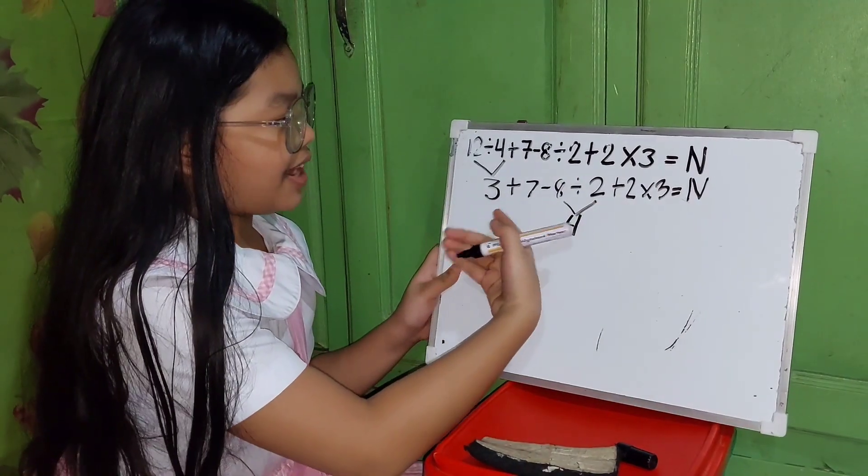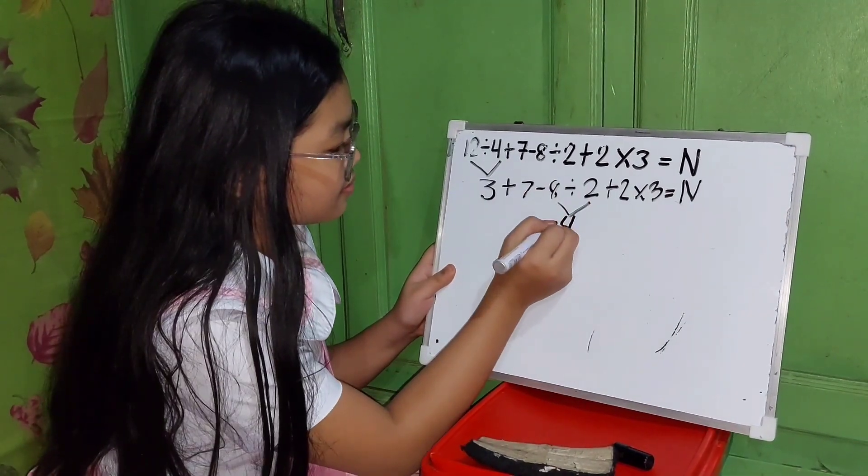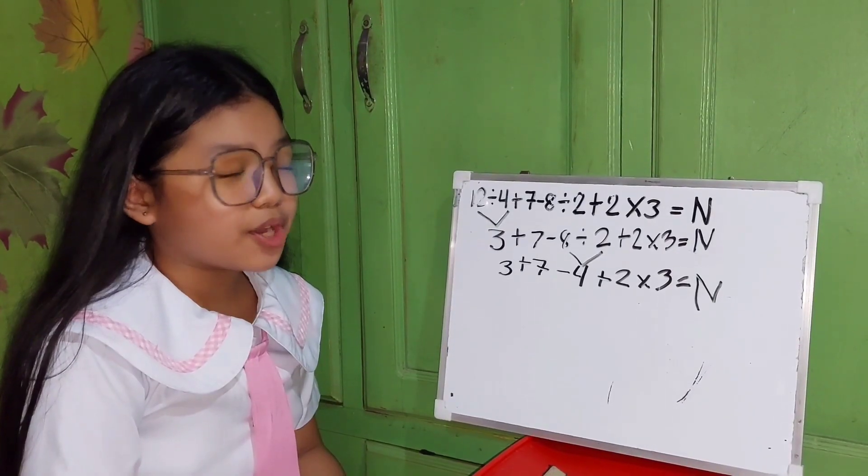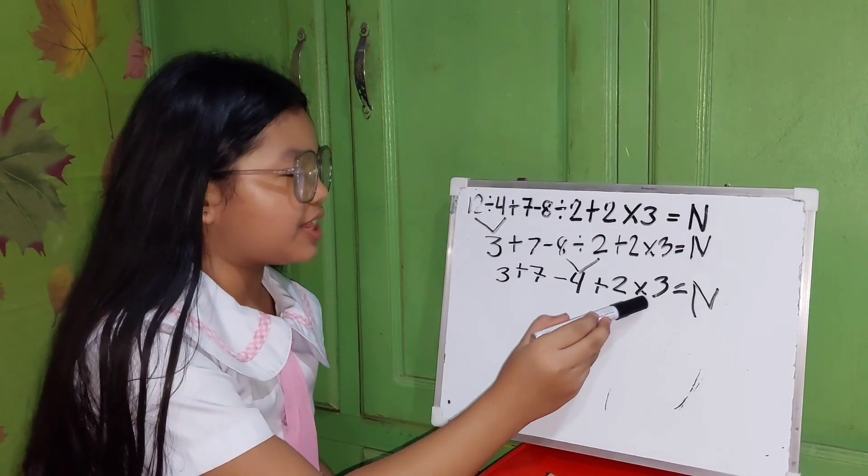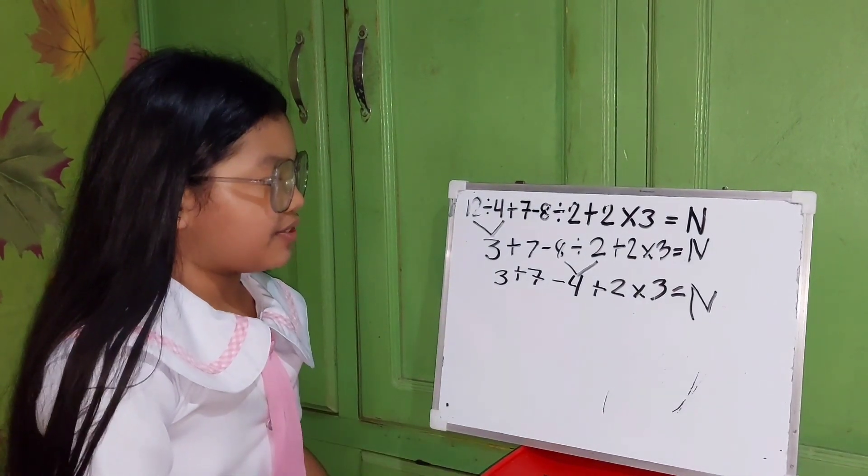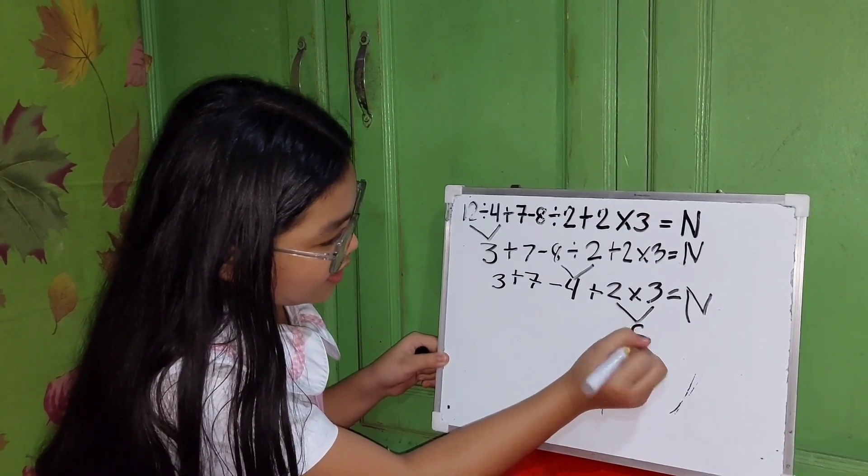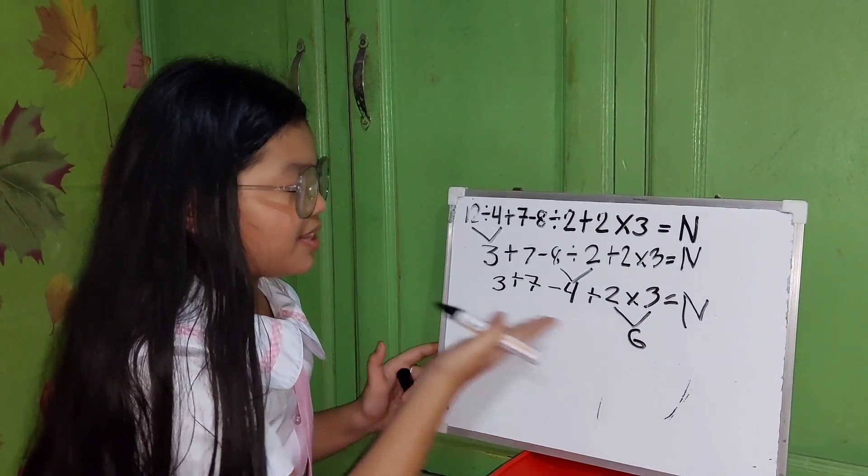Then copy the rest. So next, we are going to multiply 2 and 3. 2 times 3 equals 6.